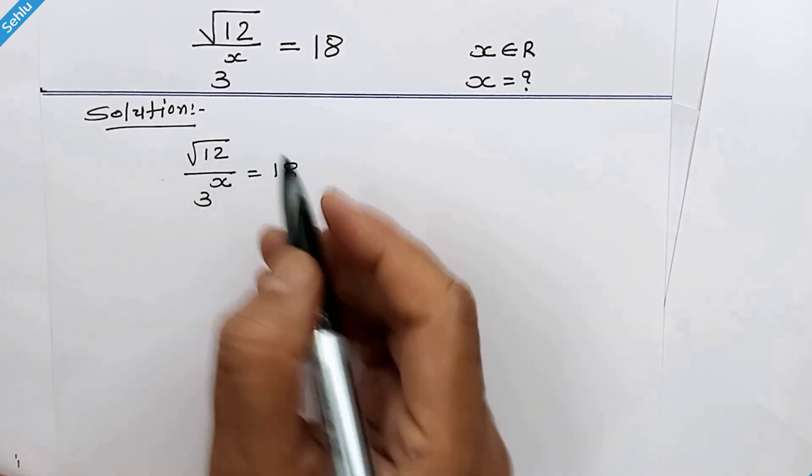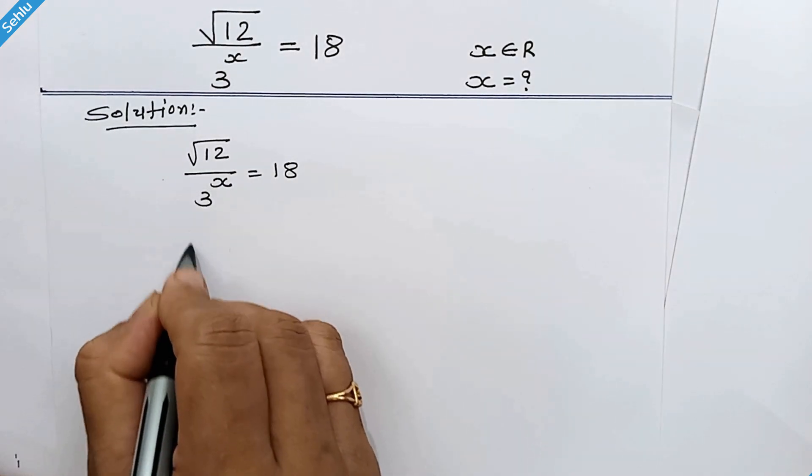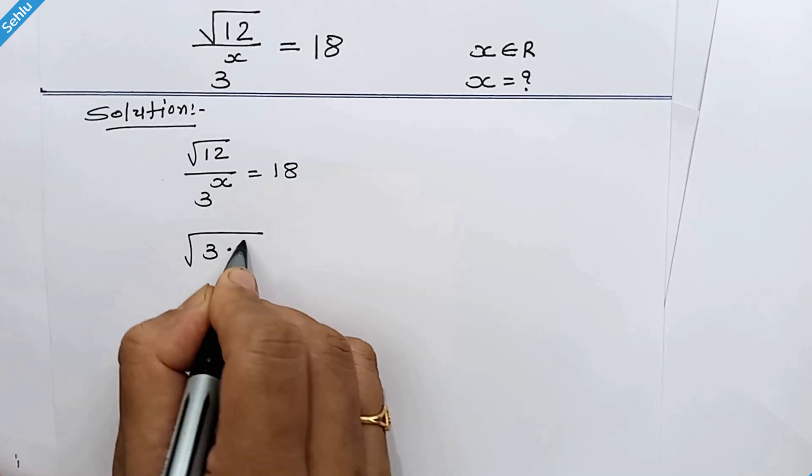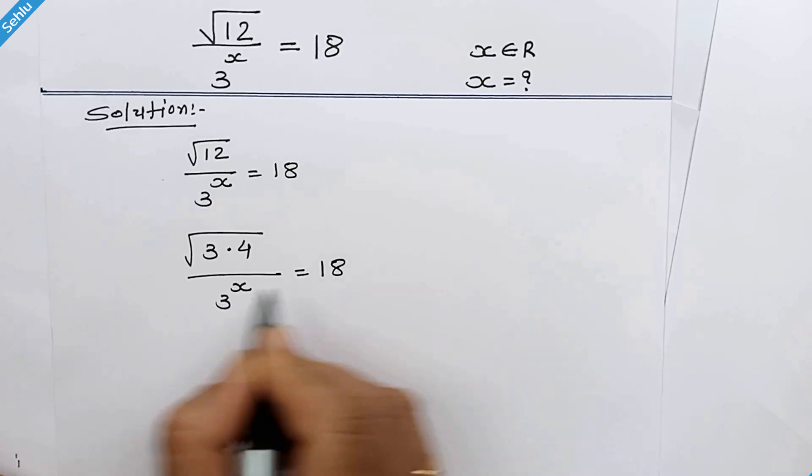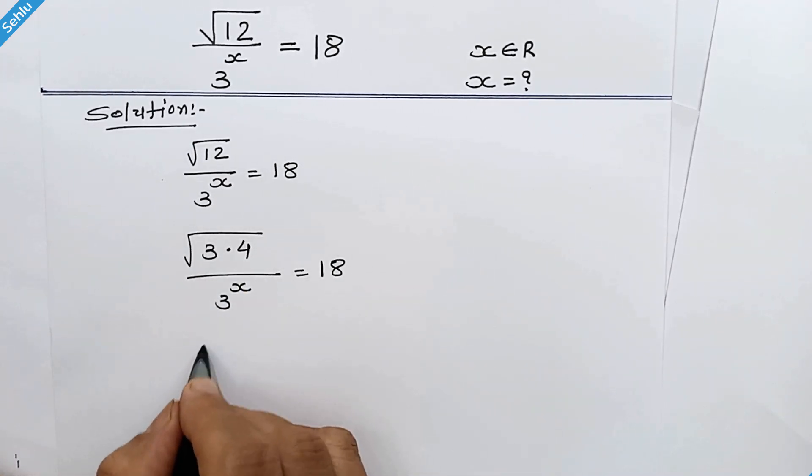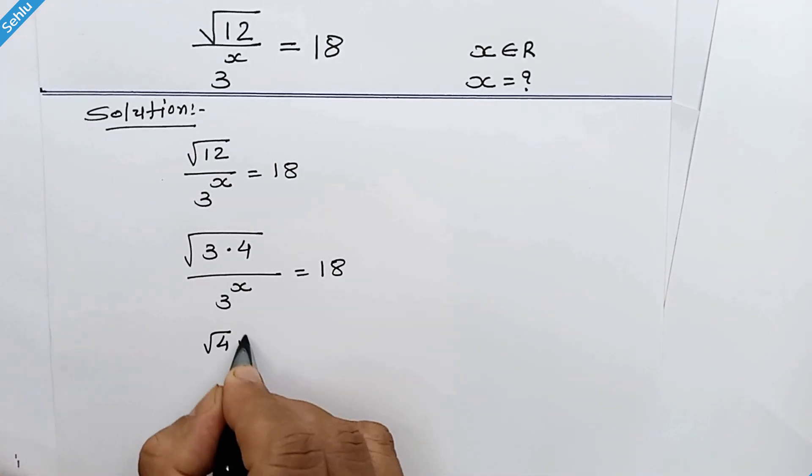In the first step we will factorize square root 12. So it will be 3 times 4. We can write these two separately. So it will be square root 4 times square root 3 over 3 to the power x.